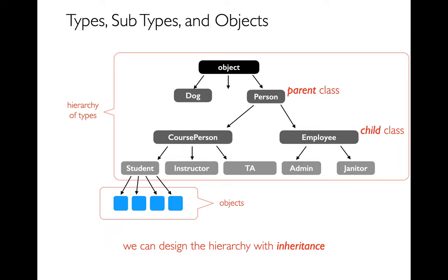Let's take people as an example. Maybe I have a person class and all persons have some things in common — maybe everybody has a name and an age, maybe most people have a social security number. There are different kinds of persons: with respect to a university, we might have students, instructors, and TAs related to a course. They all share some information but there are specific things — for instructors and TAs, information about what they're paid; for students, their grade.